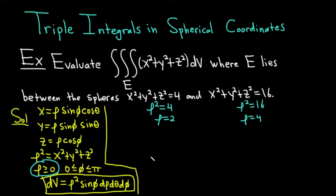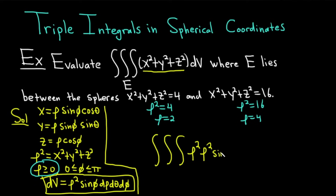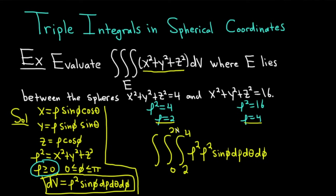Now we're ready to write the integral. We have the triple integral of x squared plus y squared plus z squared, which is just rho squared. Then dV becomes rho squared sine phi d rho d theta d phi. For the limits of integration: rho goes from 2 to 4. Then theta, since we have full spheres, goes from 0 to 2 pi. And phi goes from 0 to pi, as specified earlier.